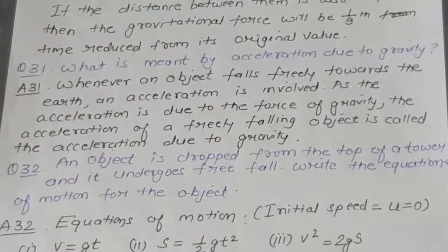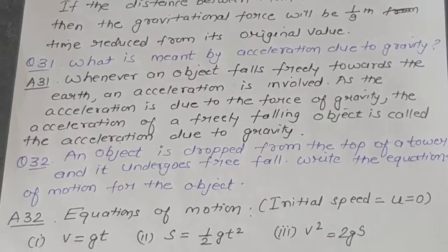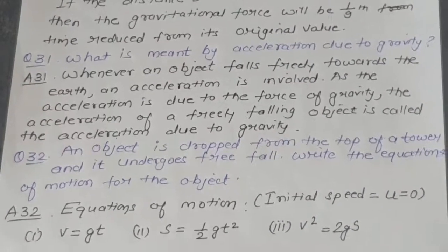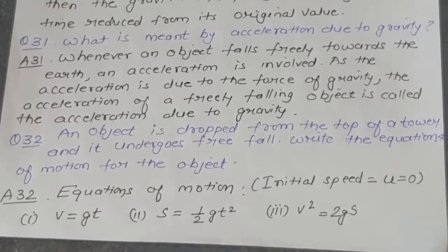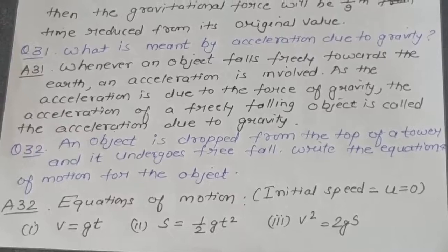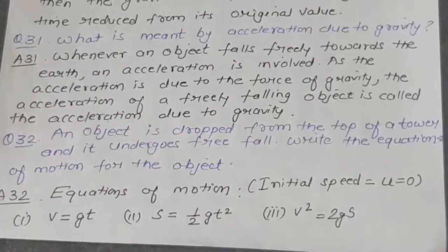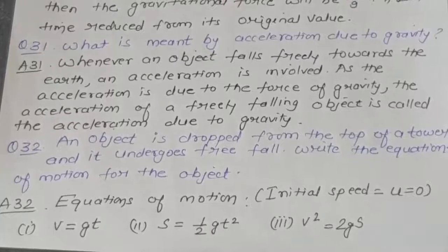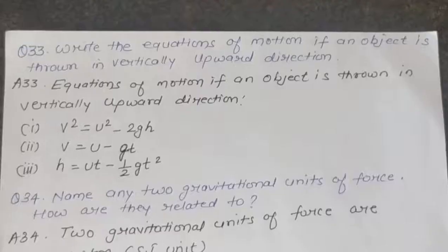Question 32: An object is dropped from the top of a tower and undergoes free fall. Write the equations of motion for the object. Answer: Since the object is dropped, initial speed u = 0. The equations become: v = gt, s = ½gt², and v² = 2gs.